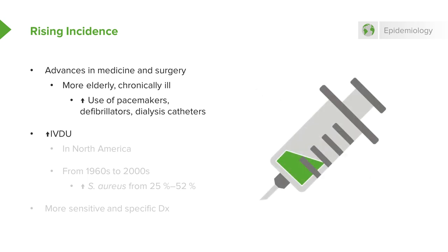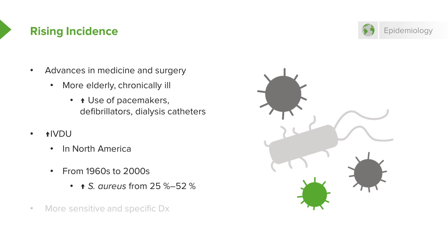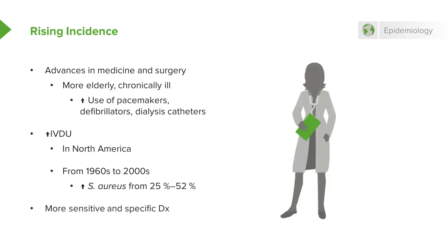Looking at the incidence of IV drug use in North America, from the 1960s to the 2000s there's been an increase in staphylococcal endocarditis from about 25% to 52%, reflecting the use of illicit drugs. The other reason endocarditis seems to be on the rise is because we are now better able to diagnose it than we were back in the 1960s — we had essentially blood cultures only to diagnose infective endocarditis then.